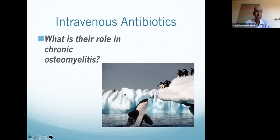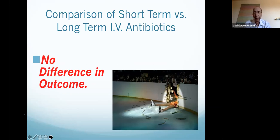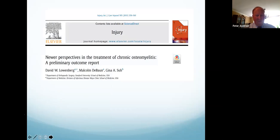IV antibiotics — what's their role in chronic osteomyelitis? The only study that had been done was one by George — a retrospective-prospective study of people who got less than two weeks of IV antibiotics in the prospective arm, versus six weeks or more of IV antibiotics in the retrospective arm, with over 400 patients in each treatment arm, one surgeon doing all cases. When George went over his data: no difference in outcome at all. No journal would publish this — it was considered too controversial. Before he died, I promised him I'd get it published. We published it in 2019 in Injury.